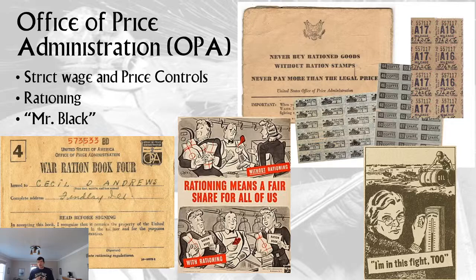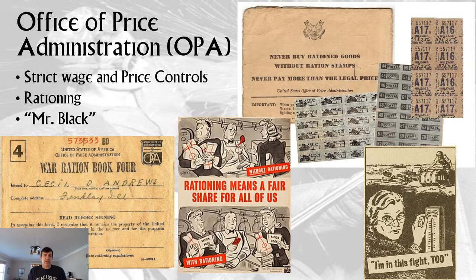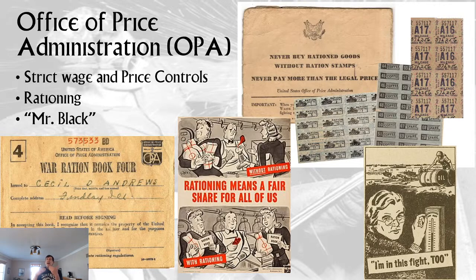To deal with inflation, the Office of Price Administration would be created with strict wage and price controls to make sure inflation did not get too bad. Also the rationing of goods — people could not buy as many high-value products, which would keep the price down.